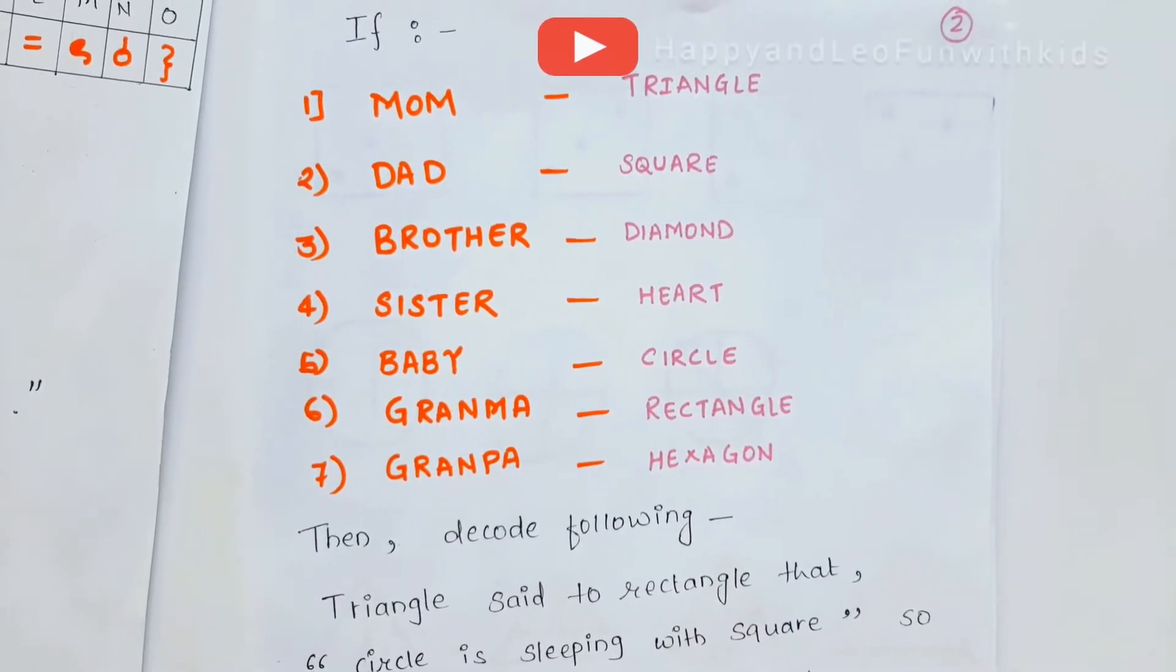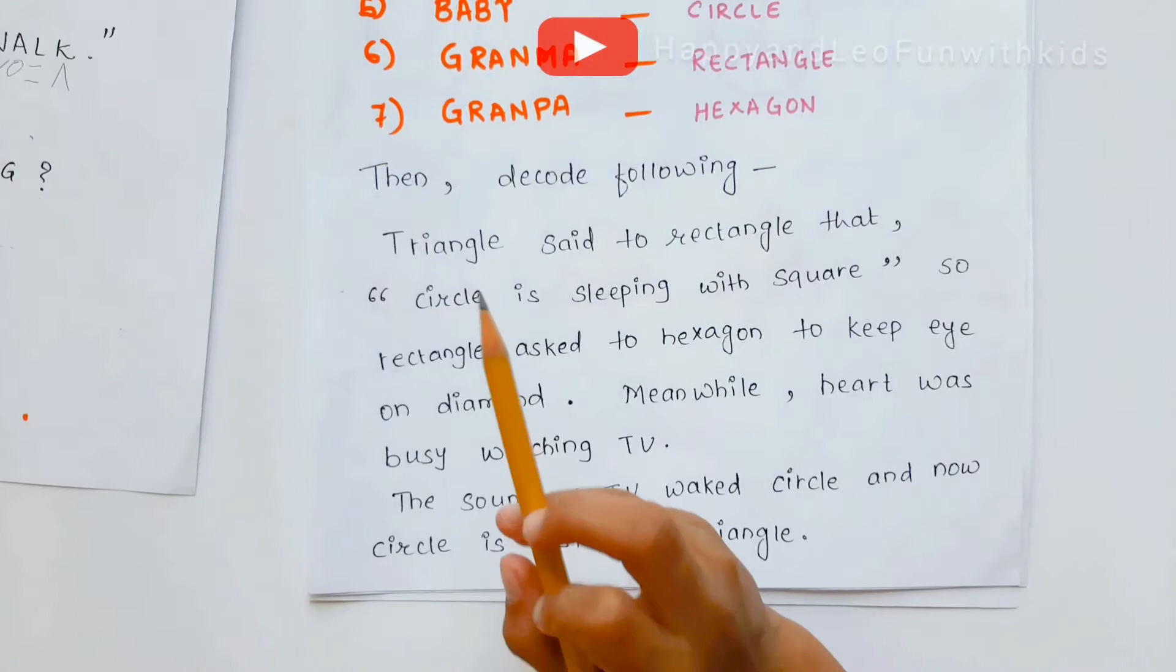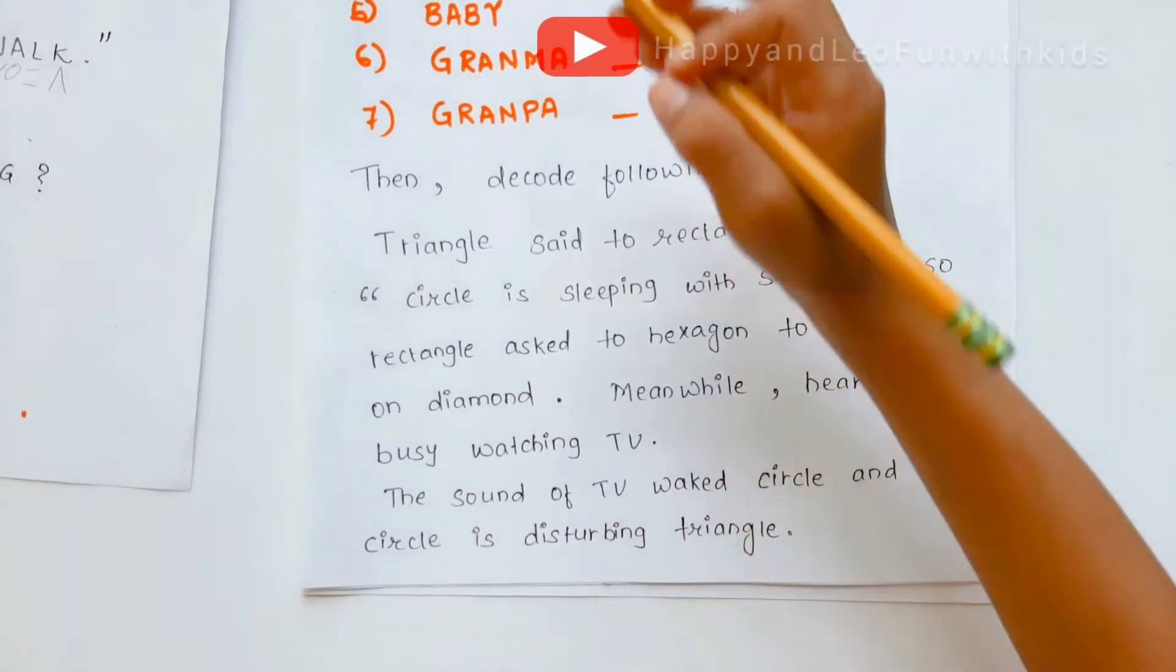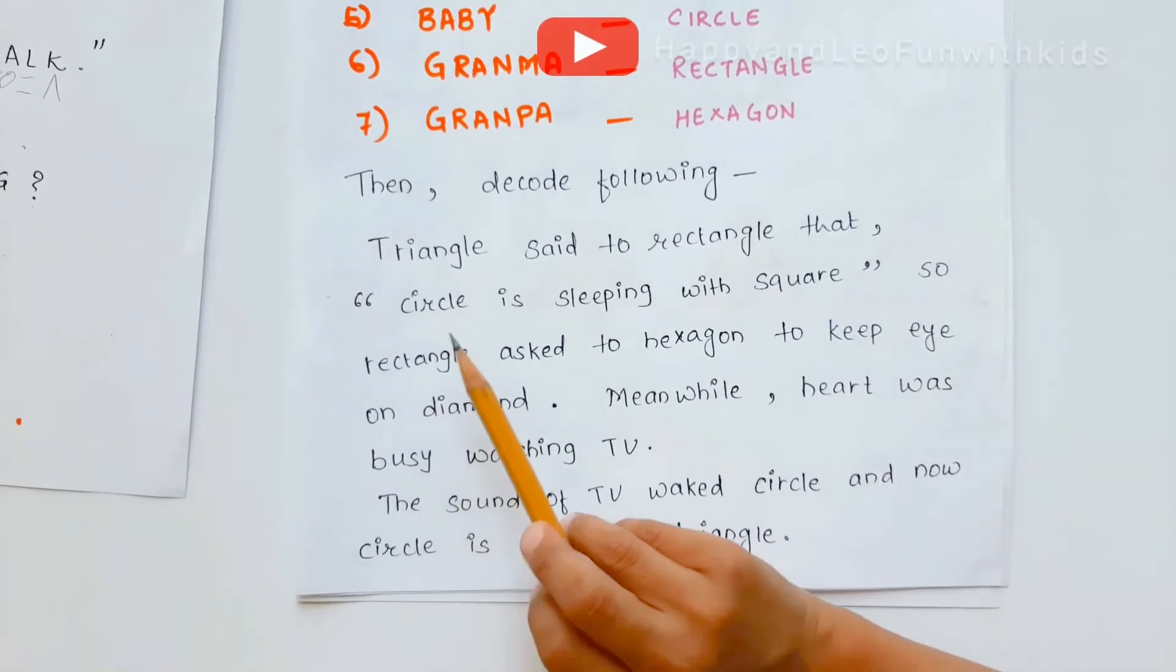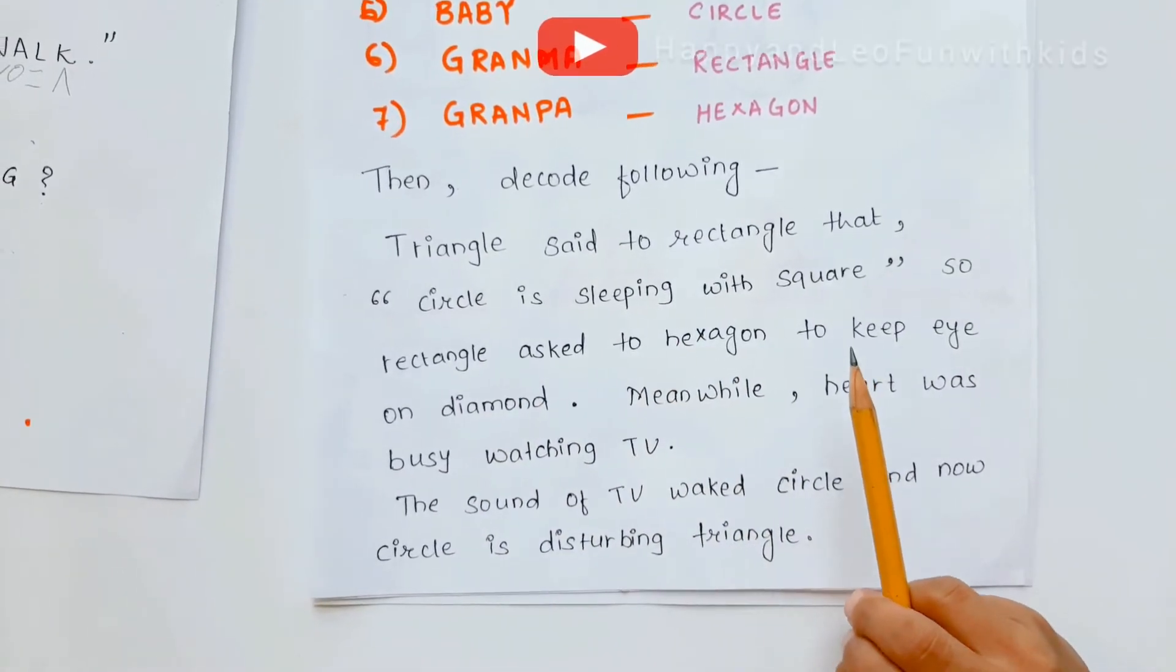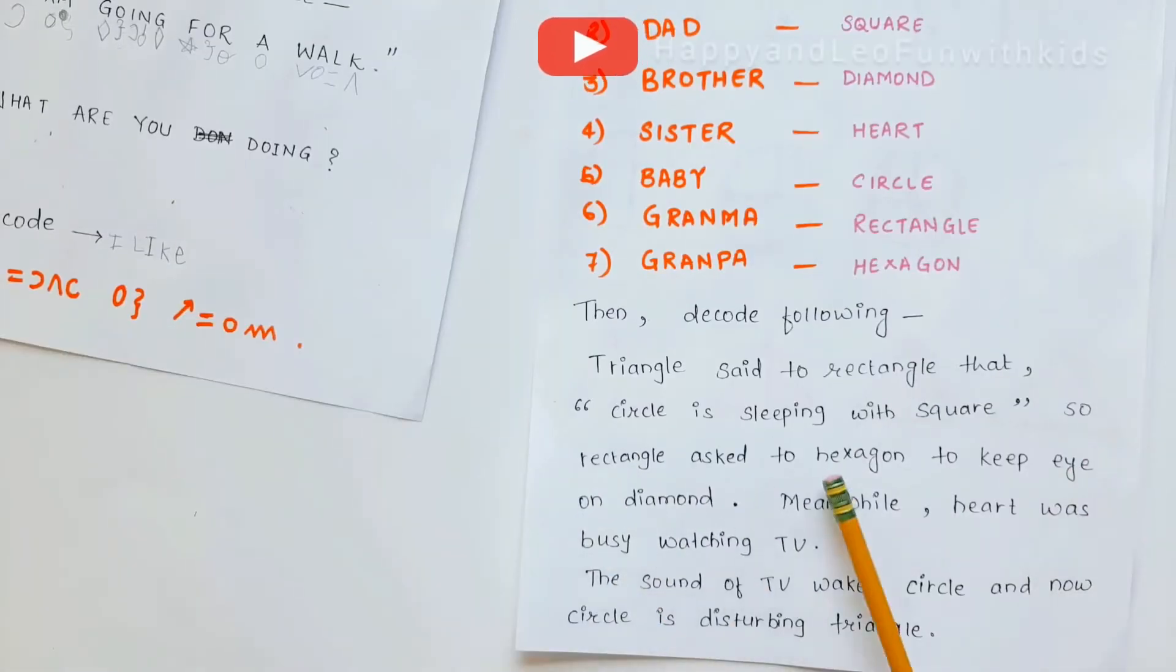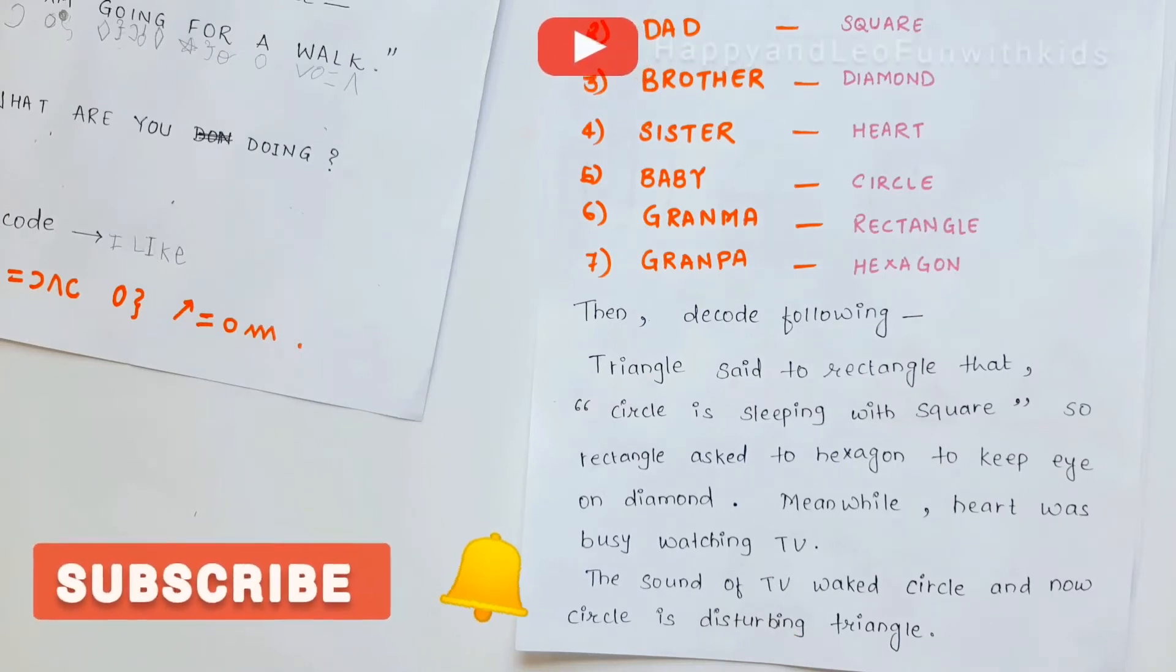Then we decode the following. Triangle, that means mom said to rectangle that circle is sleeping with square. So rectangle asked a hexagon to keep an eye on diamond. Meanwhile, heart was busy watching TV. The sound of the TV woke up circle and now circle is disturbing triangle.